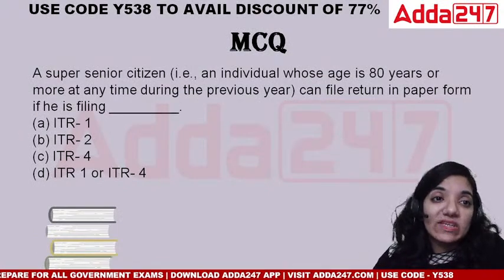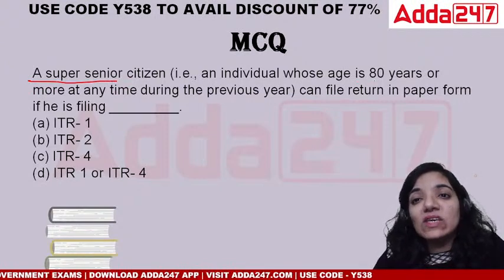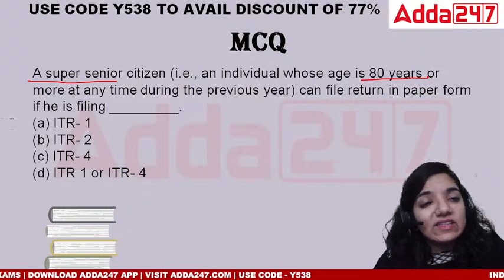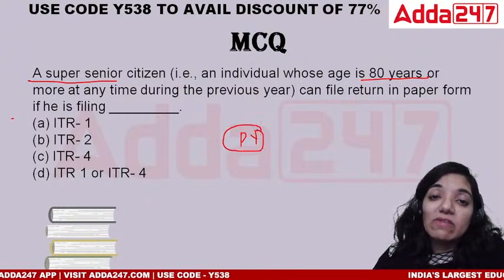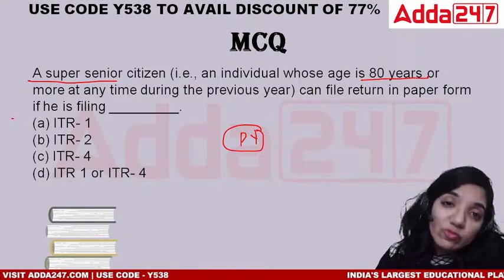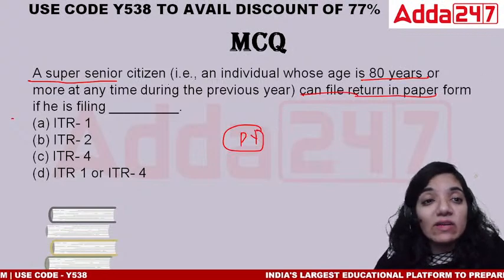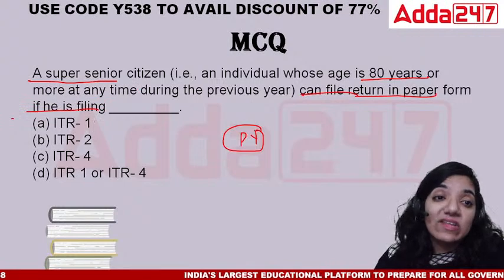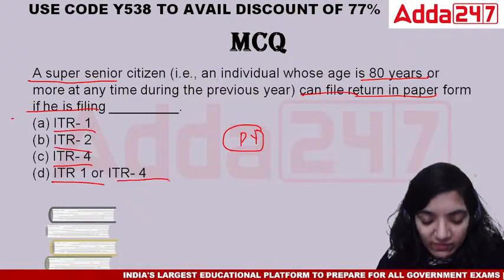One more question: a super senior citizen who is an individual whose age is above 80 years — even as of 31st March of the previous year — can file the return in paper form if they are filing ITR1, ITR2, or ITR4.